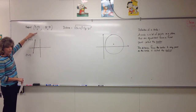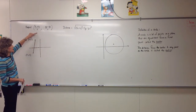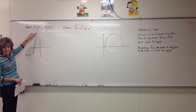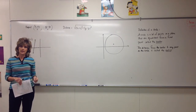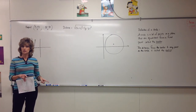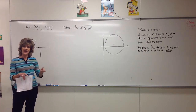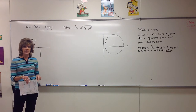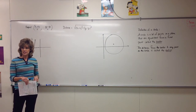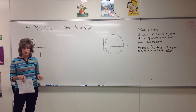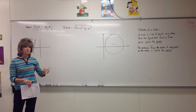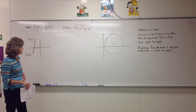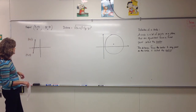The midpoint formula is really all about finding the middle of something. Just like if you were going to find the middle grade between two grades, it's an average. In order to average, you add and divide by two — two grades, two points. Add and divide by two.